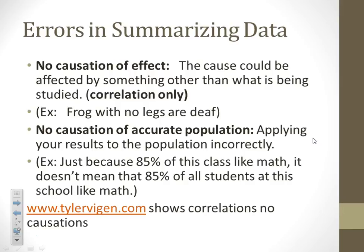For example: frogs with no legs are dead. Just because they don't have legs doesn't cause them to be dead — there are probably more things going on. There was some kind of birth defect. So if a frog is born without legs, then it kind of makes sense that there would be something else wrong with that frog.